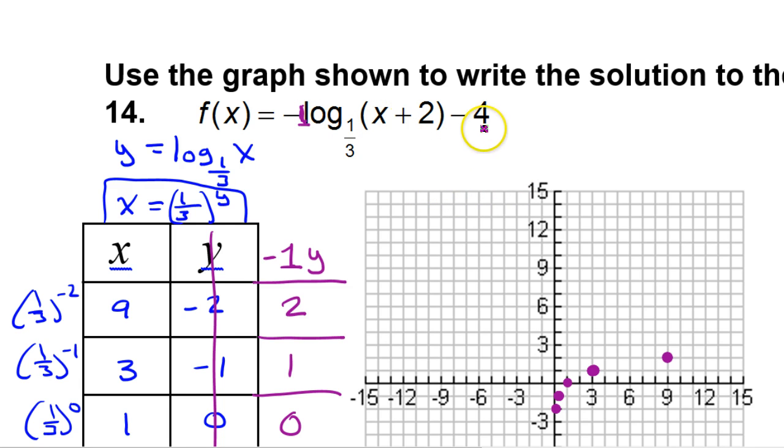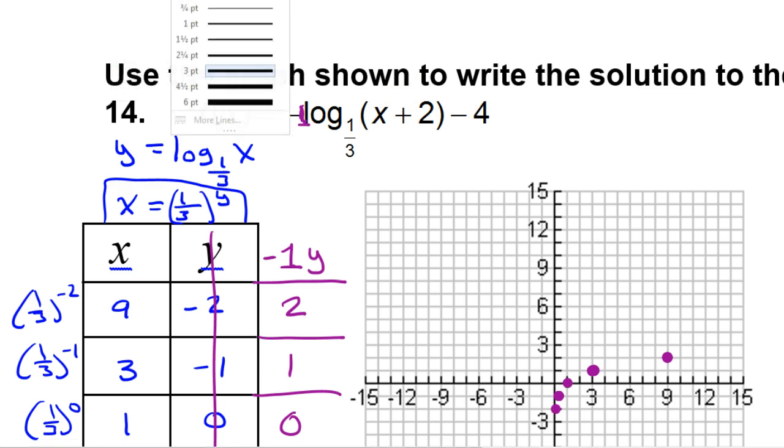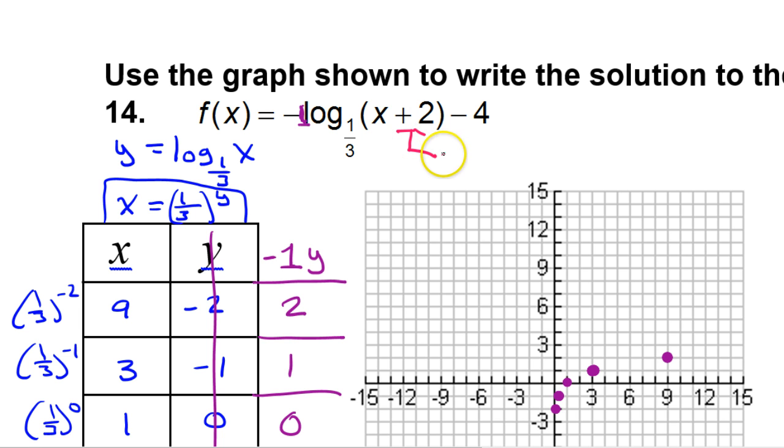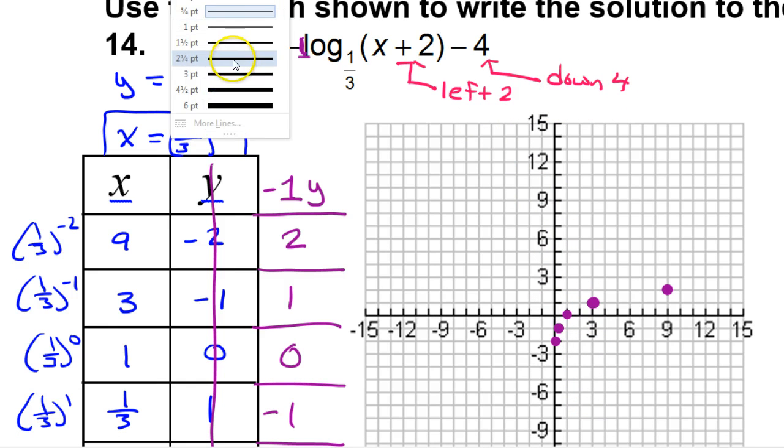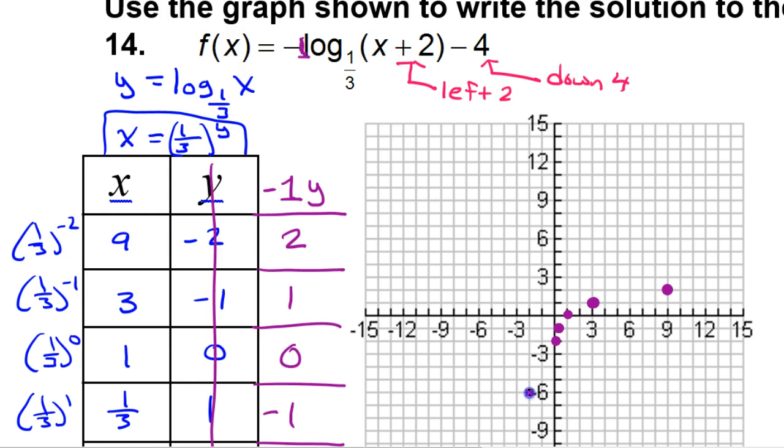What we haven't done yet is we haven't done the translations. So let's remember that the positive 2 right here is going to shift us to the left 2. This is going to be always left right motion, the opposite of what it looks like. So positive 2 will be left 2. And this is going to move us down 4. So we will move each of these 5 points left 2 and down 4. So left 2, down 4. It would be here and then this one will be just here. Left 2, down 4. It's going to be here and here. Left 2, down 4. It's going to be here. So these 5 pink points are these 5 purple points shifted left 2 and down 4.